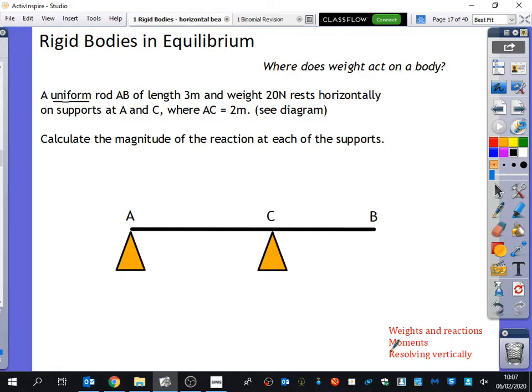Now, before I actually get to this bit, I've realised I've underlined the word uniform. What does uniform actually mean? It's when the mass is spread evenly. Good. The mass is spread evenly. So where does the weight act on the body if it's uniform? In the middle. In the middle. In the centre. So that's one of the things that we know about if it's a uniform body.